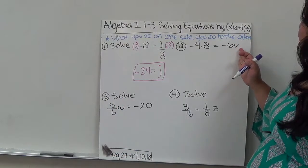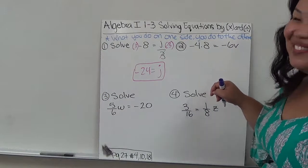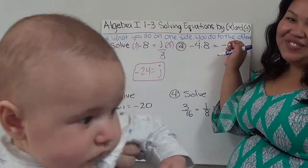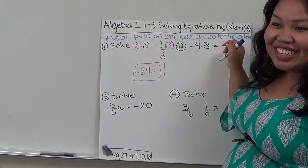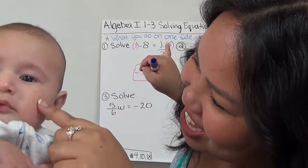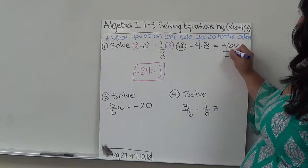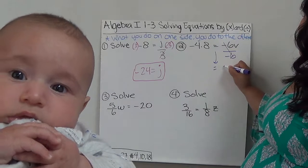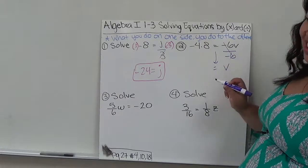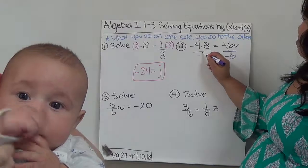We need to isolate V by getting rid of its coefficient negative 6. And how we do it is that negative 6 is being connected to V by multiplication. So the opposite of multiplication would be division. So then we'd have to divide by negative 6. This cancels out, bring down that equal sign, and I end up with just V. And what I do to one side, I have to do to the other. So if I divide by negative 6 here, I have to divide by negative 6 here.